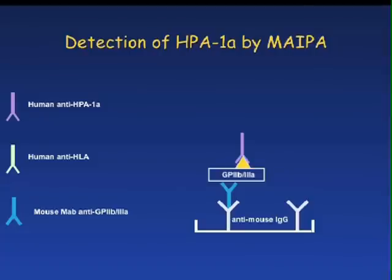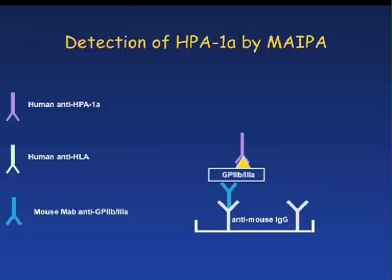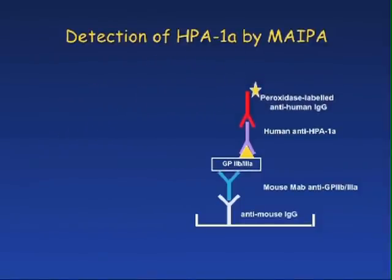After incubation and more washing, only the target glycoprotein is left. To detect any human IgG bound to this glycoprotein, we add an enzyme conjugated anti-human IgG and incubate.